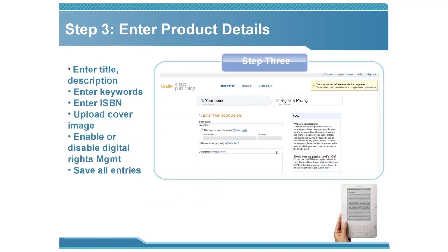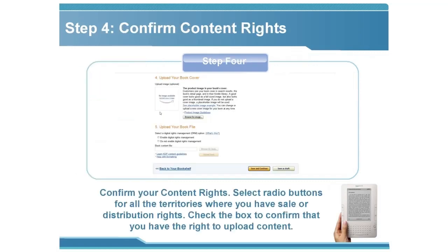Step three: Enter your product details, including the title, description — note the limit of 4,000 characters — and keywords. Enter an ISBN if you have one, otherwise Amazon will assign one for tracking. Leave the publisher field blank if you don't have one. This is also where you upload your cover image. Note the option to enable or disable digital rights management. When done, click 'Save Entries.' Step four: Confirm content rights. Select radio buttons for all territories where you have seller distribution rights and confirm that you have the right to upload the content.